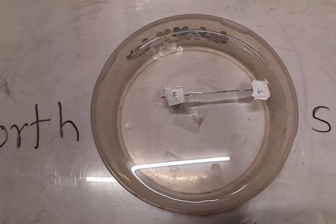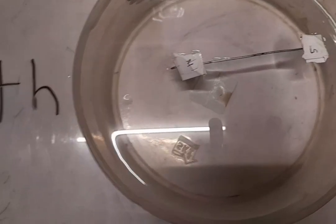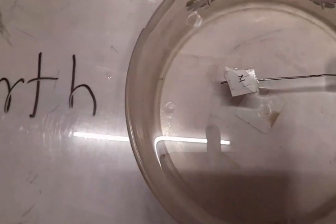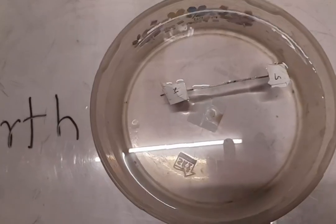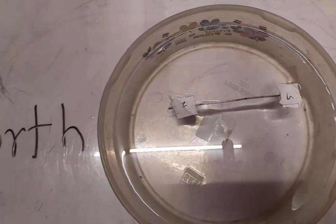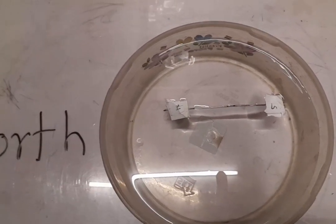This needle, non-magnetized needle, this needle is moving toward the same pole. This is north and this is also north. This is south and this is also south. It is proved that this needle is not having any magnetic property.